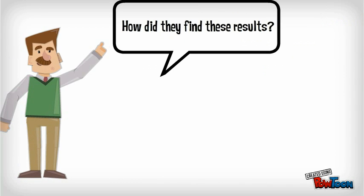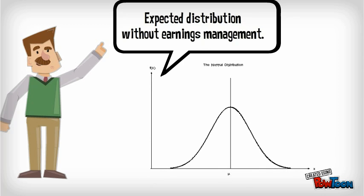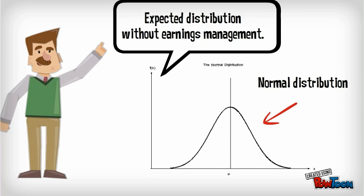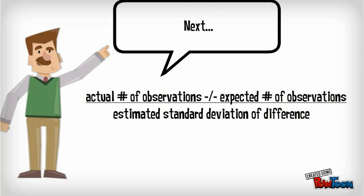You might wonder how the researchers find these results. First, they calculated the expected distribution without earnings management. This would be a normal distribution with mean zero, and a standard deviation of 1. To test for discontinuity at zero, they calculated the difference between the actual number and the expected number of observations.